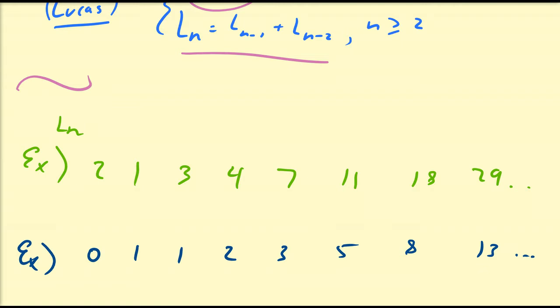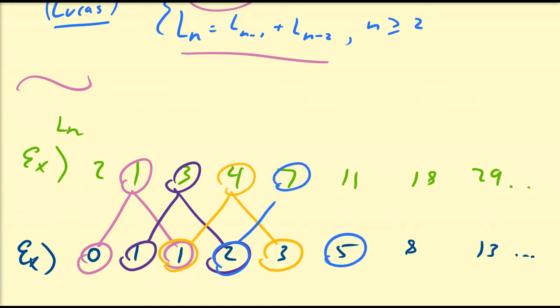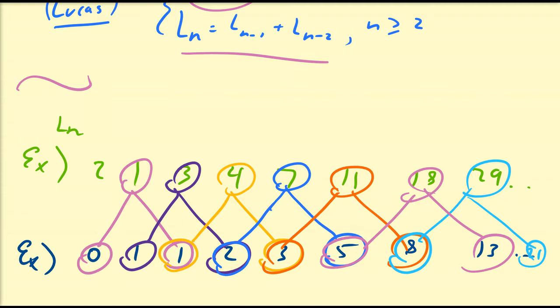Can we see any patterns here? Take a moment and see if you can find any connection between these rows. If you look closely: 0 plus 1 is equal to 1; 1 plus 2 is equal to 3; 1 plus 3 is equal to 4; 2 plus 5 is equal to 7; 3 plus 8 is equal to 11; and 5 plus 13 is 18. So there is a very intimate connection — the nth Lucas number equals F(n-1) plus F(n+1).